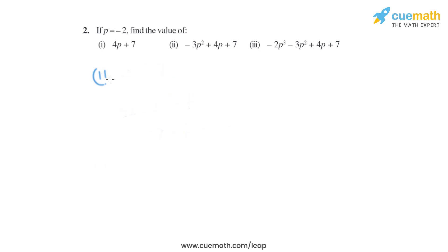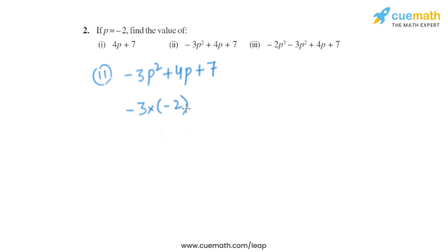Now let's move on to the second part. The expression given is minus 3p² + 4p + 7. Putting p = -2, it becomes minus 3 into minus 2 squared, plus 4 into minus 2, plus 7.